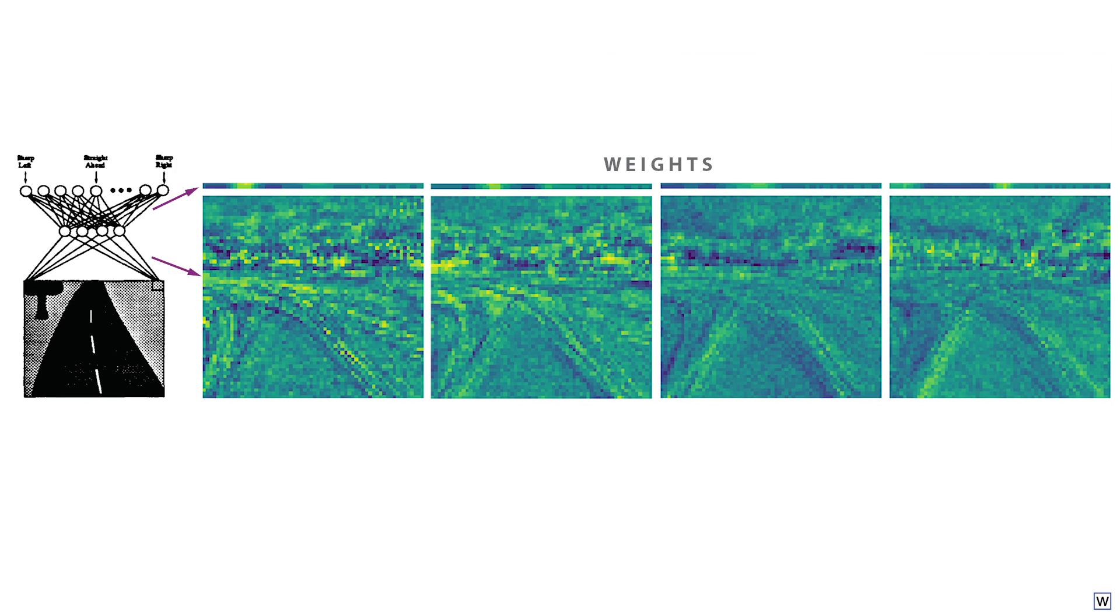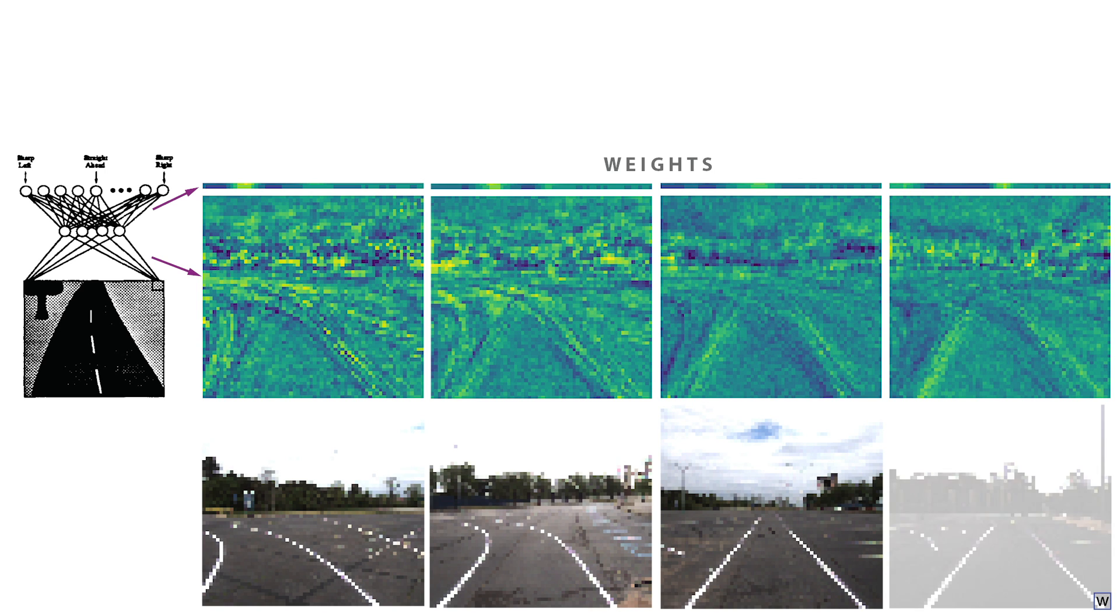Now, a good follow-up question here is how? How did Alvin learn to steer? Well, if we have a look at the weights that Alvin learned, we may gain some insight. Notice that our weights no longer look random and appear to have learned some type of structure. More specifically, if we compare our weights to some of our training images, we see that our neural network has learned a set of lane marker detectors.